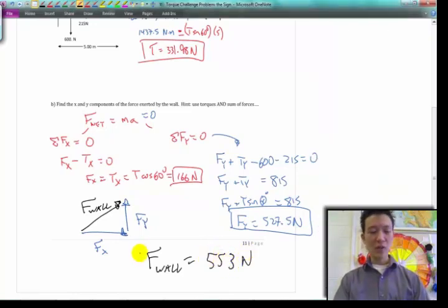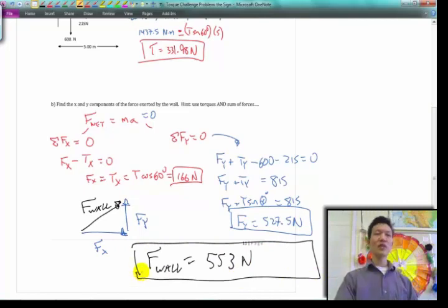So, in real life, an architect would have to make sure that the force of that hinge can support at least 553 newtons. And actually, technically, to be complete,